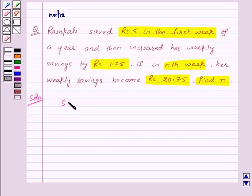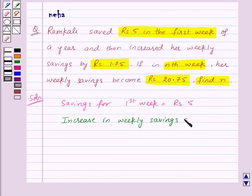As given in the question, Ramkali's savings for first week are rupees 5. Then increase in weekly savings is of rupees 1.75.